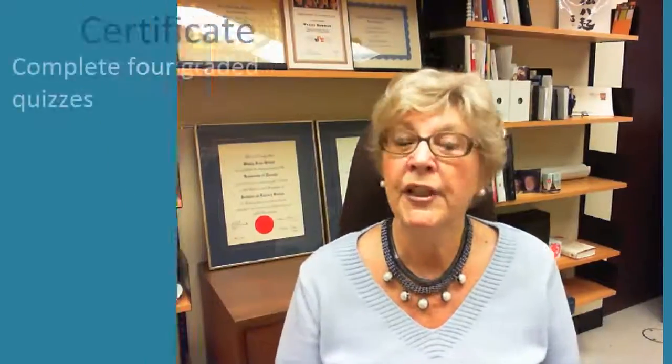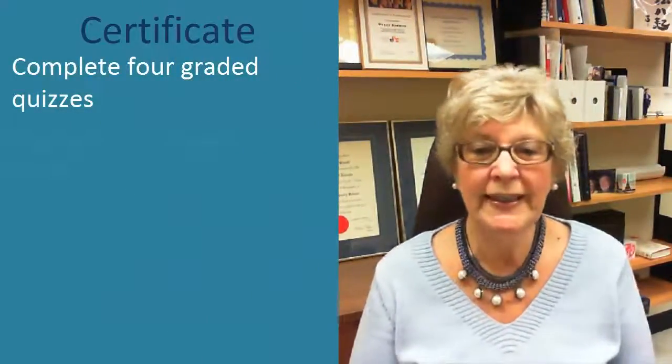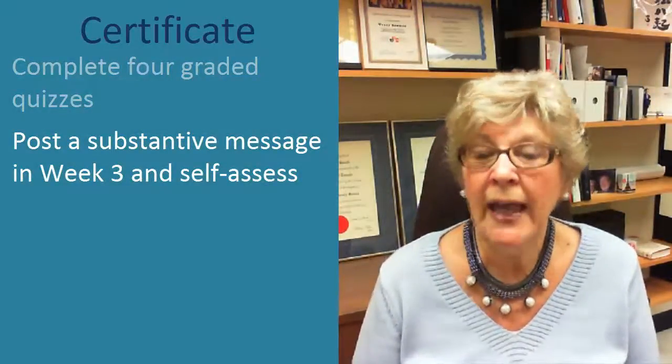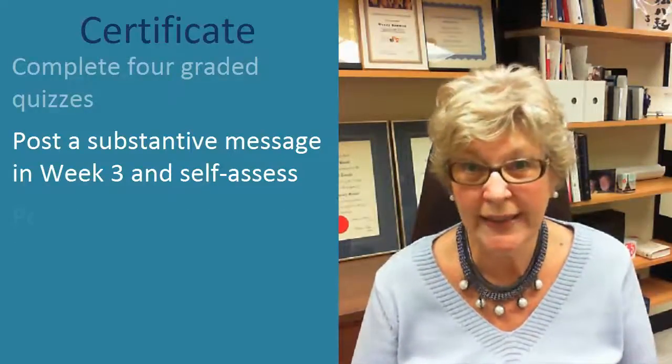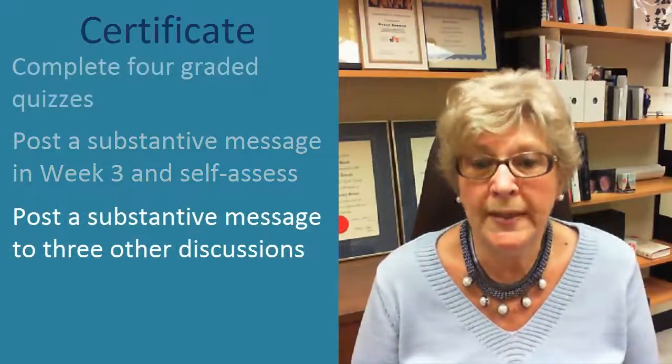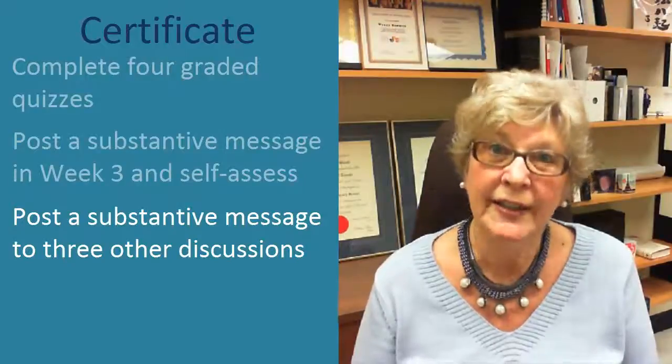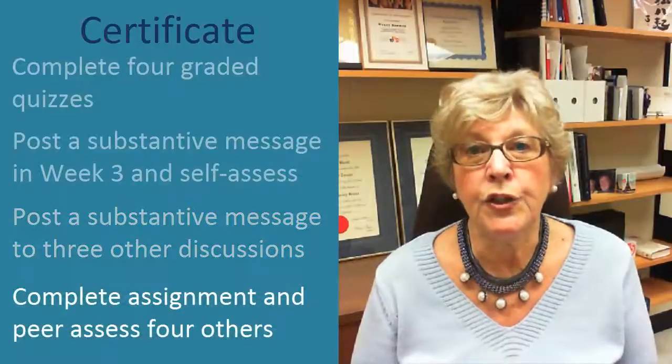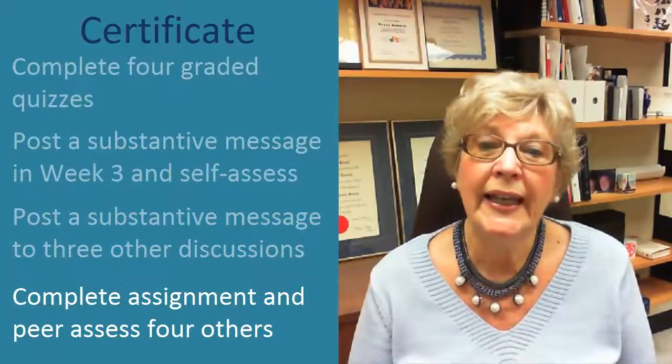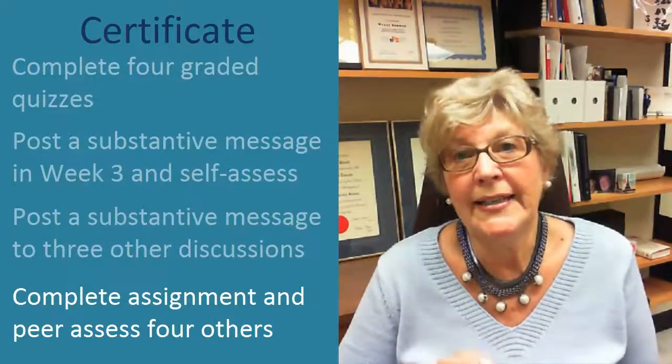About earning the certificate — the honour code certificate — the requirements are stated in the week zero materials. In broad terms, you have to do four things. You have to complete four graded quizzes, which are automatically graded. Second, you have to post a substantive message in week three and self-assess it based on instructions that we will provide. Third, you need to post a substantive message to a minimum of three additional discussion topics. And fourth, you need to complete the short reflection at the end of the course and participate in the peer assessment process by reading and assessing four other reflections. The course staff are going to be reading postings and responding to the discussion as we go along, and will be looking at assignments at random to ensure that the assignments and assessments are within the guidelines of the course.